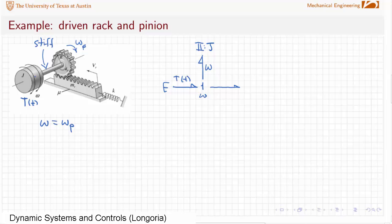But now I need to transform from the rack, sorry, from the pinion to the rack. And how do I do that? I do that with a transformer. And that modulus that I would need here would relate the radius to that rack so that I'd have a relationship between omega and the velocity of the rack, omega of the pinion.